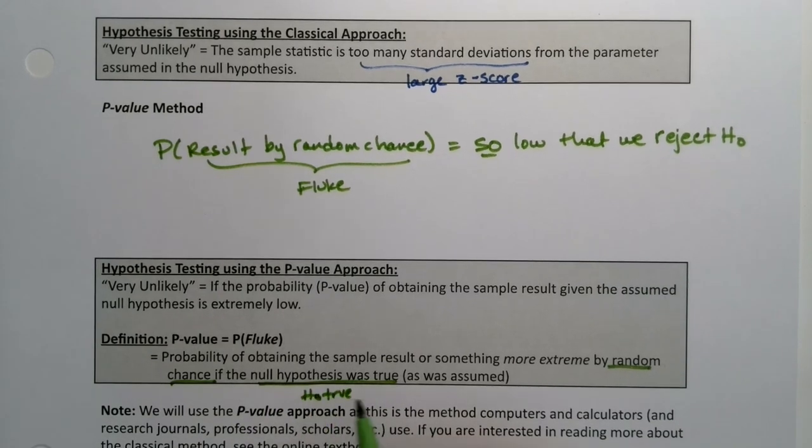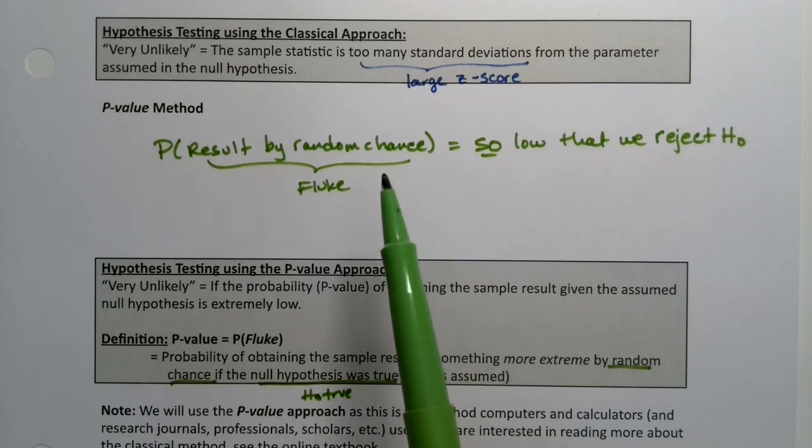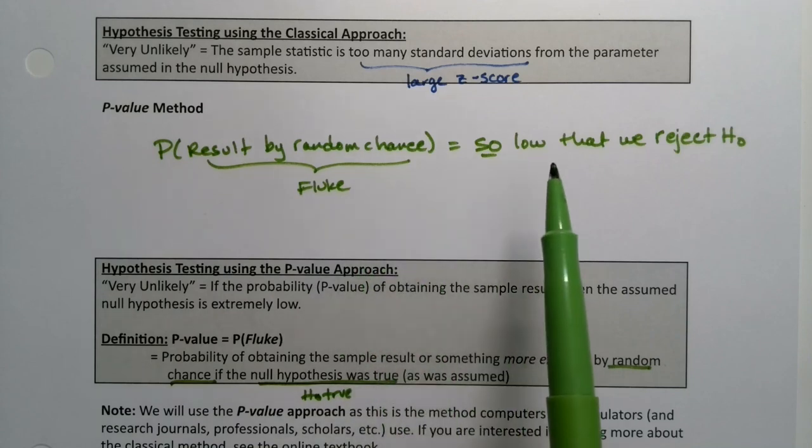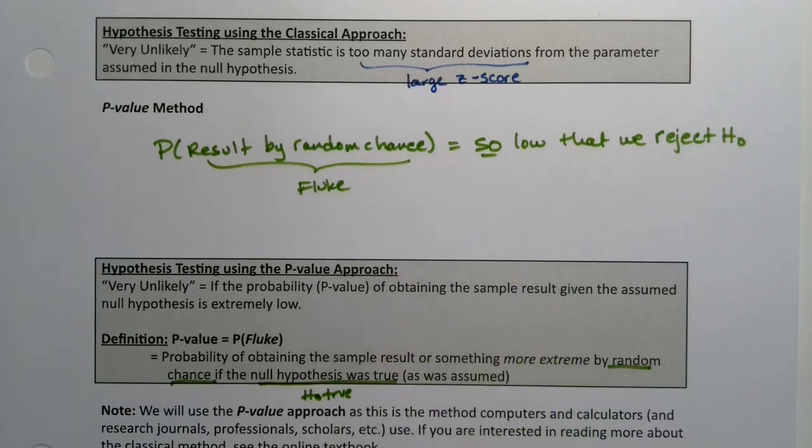So if what you assume to be true is the null hypothesis and your result is so far out there, then you think maybe the null hypothesis is not true, and you reject it. For example, we thought our dice were fair, and then we got a result so extreme, the p-value was so low that we rejected that the dice were fair.